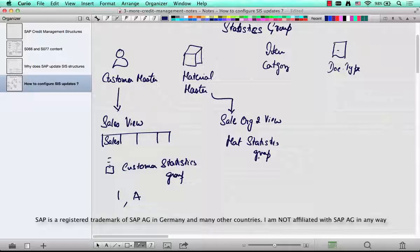You can take one, two, three, four, five, or you can have an A or a B or a C. Any single character. Same with item category and document type.